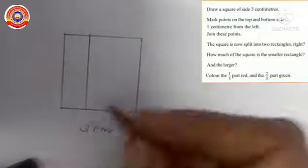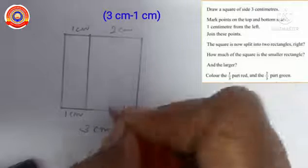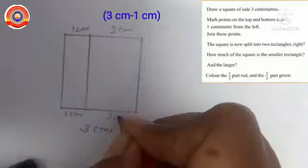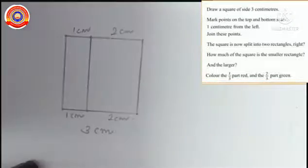We know that the length of this side is 3 cm. The length of this smaller side is 1 cm, so here also 1 cm. Therefore, the length of this larger side is 2 cm — that is 3 cm minus 1 cm — and here also 2 cm. Next, we have to find how much of the square is the smaller rectangle. The length of this square is 3 cm. Out of these 3 cm, the smaller rectangle is of length 1 cm. So, the smaller rectangle is 1/3 part of the square.